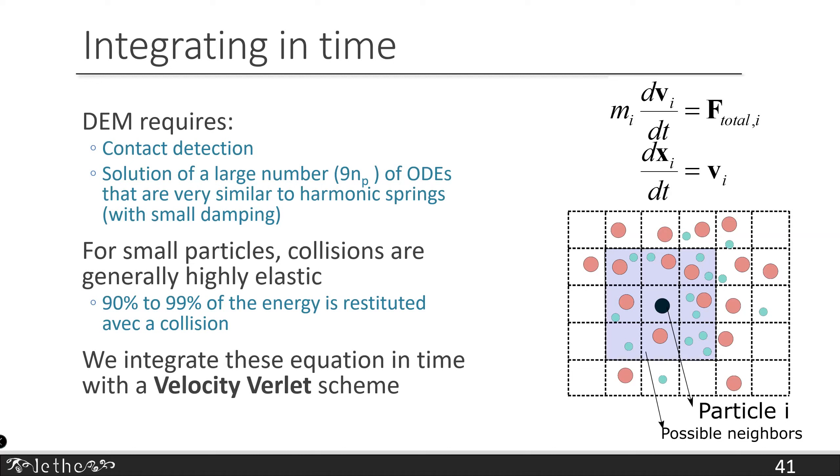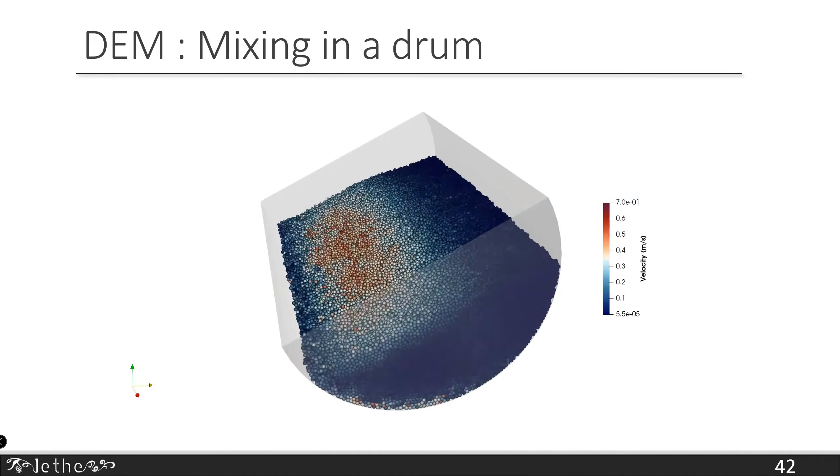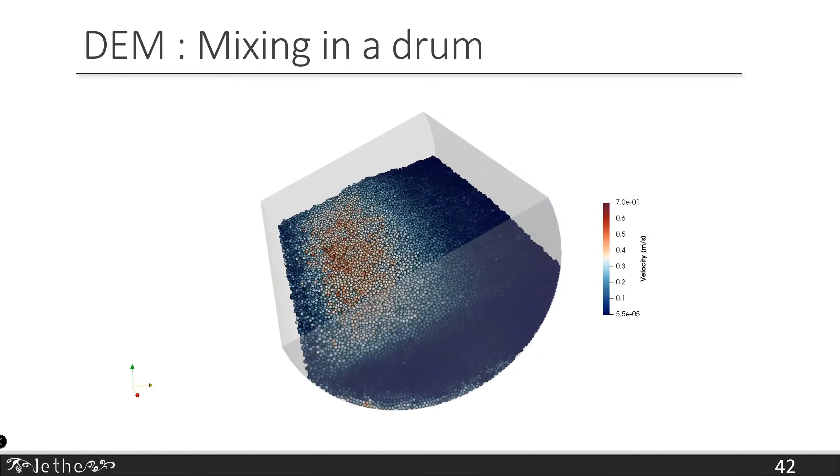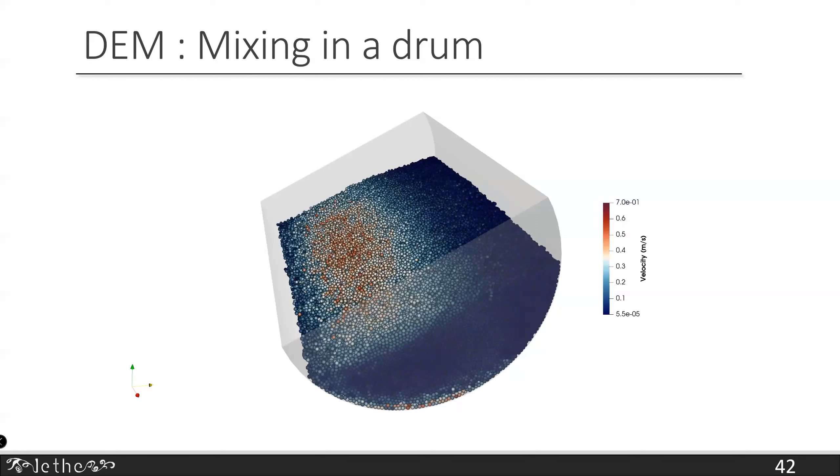The issue is DEM is expensive because we need to do contact detection - find with which particle our particle collides - and we need to solve a very large number of ordinary differential equations. We solve nine times the number of particles. The largest simulation we did was about close to 100 million particles. Imagine we're solving 900 million ordinary differential equations that are nonlinear and make multiple particles interact with one another. For small particles, the collisions are very elastic. The majority of the energy is conserved. This looks a lot like molecular dynamics and you need to use symplectic integrators. We use a velocity Verlet integrator. These integrators have the capacity of keeping the kinetic energy of the system when it is conservative bounded. If you do a harmonic spring with velocity Verlet, the energy will be kept bounded by a lower and higher threshold. If you integrate for a gazillion time steps, the energy will be kept within these bounds. It's a form of energy conservation.